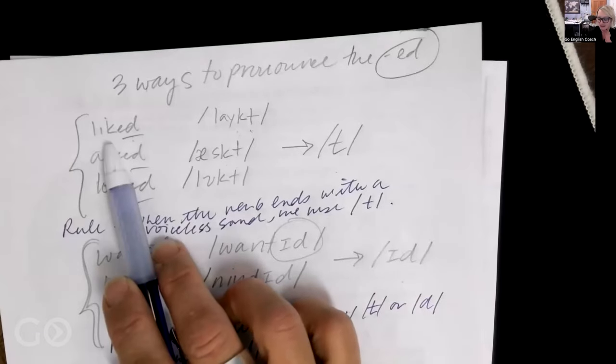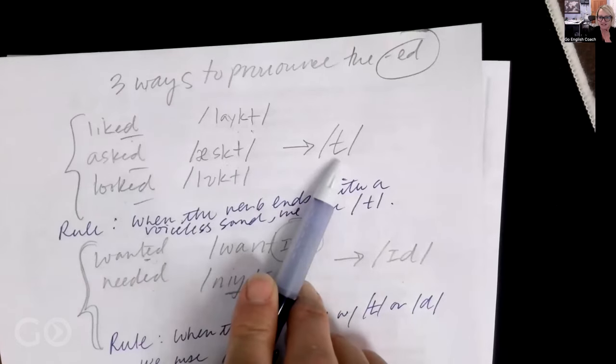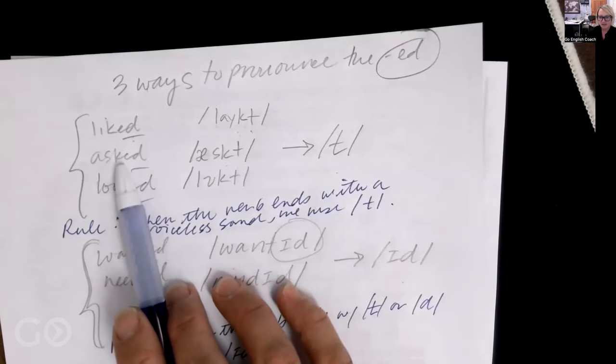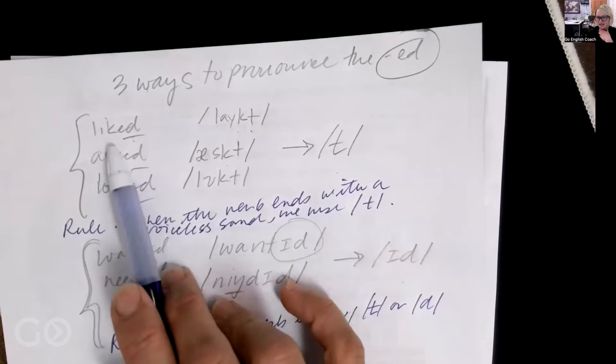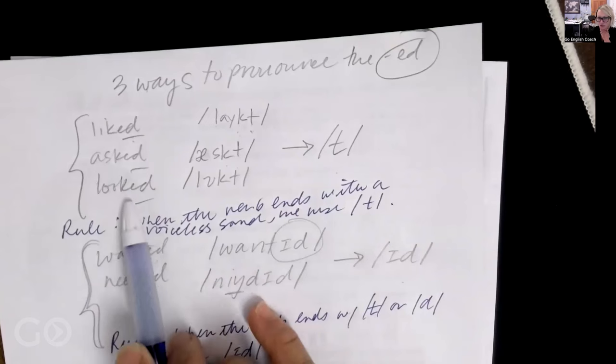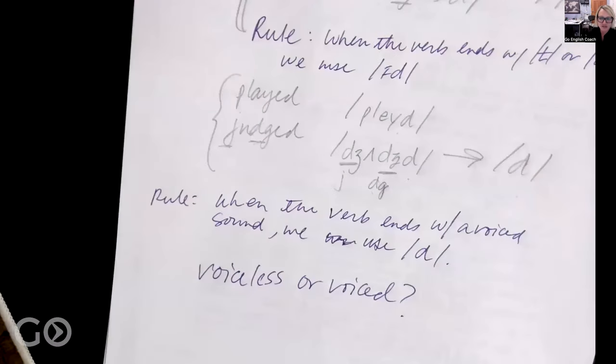So the simple answer is, when the verb ends with T or D sound, we use id. Here's the other rule. When the verb ends with a voiced sound, we use the D sound. And the rule is when the verb ends with a voiceless sound, we use T. Now, the last question that I'm going to answer then is voiceless or voiced. What does that mean? The best way that you can tell if something is voiceless or voiced is by placing your hand on your throat and saying the sound. So you have to match it. Voiceless goes with voiceless. Voiced goes with voiced. We'll practice that a little bit more.